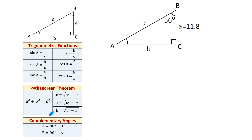Angle A equals 90 degrees minus angle B, and angle B equals 90 degrees minus angle A. That is because in any triangle the sum of all three angles equals 180 degrees, and because one of the angles is 90 degrees, the sum of the other two angles is also 90 degrees. So if we are given angle B and need to find angle A, we subtract angle B from 90 degrees, and vice versa.